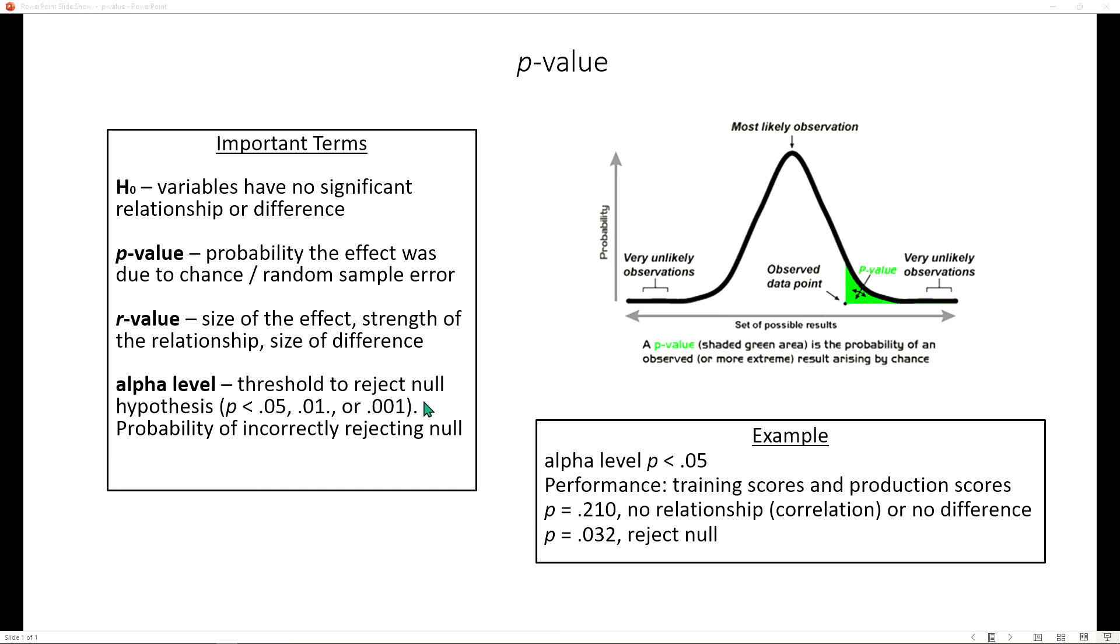These lower values like 0.001, for instance, may be applied in the medical field because we don't want to take chance when we're dealing with medications and things that will impact people's general well-being and health. Essentially, the alpha level is the probability of incorrectly rejecting the null hypothesis.